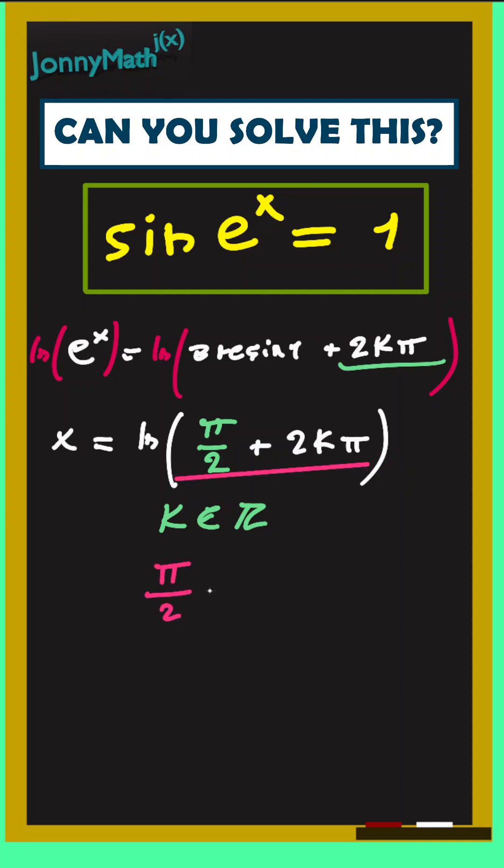We know that pi over 2 plus 2k pi has to be greater than 0. So, we know that 2k pi has to be greater than minus pi over 2. We can cancel out pi and we get that k has to be greater than minus 1 over 4.